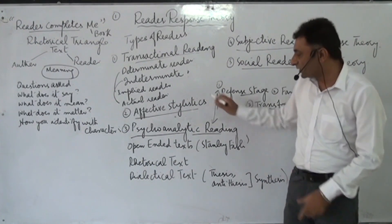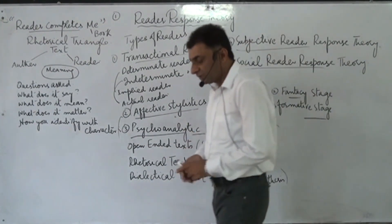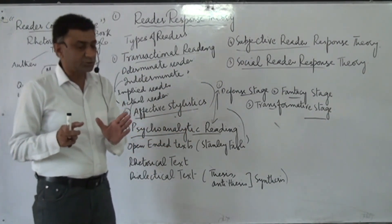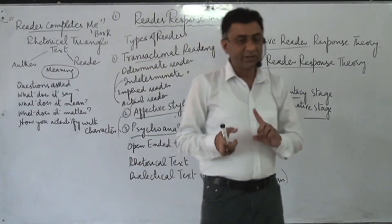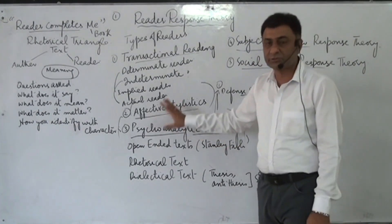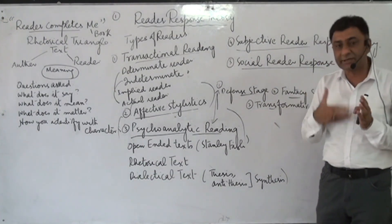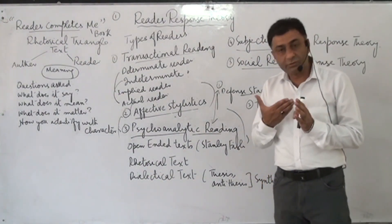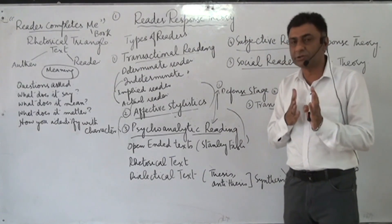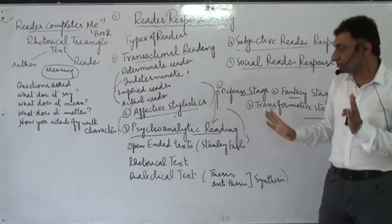The third type is psychoanalytic reading, concerned with the psychology of the reader. When a reader reads something, they bring their own psychology, mental conditions, and thoughts. For example, when watching a movie or reading literature, there are certain characters we don't like and others we do. Our response happens according to those situations. This is called psychoanalytic reading.